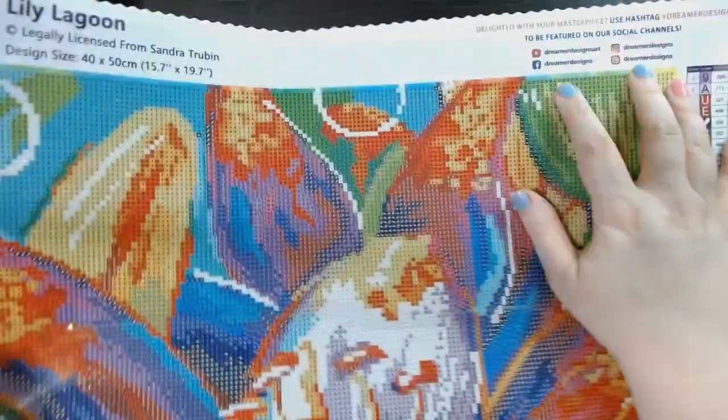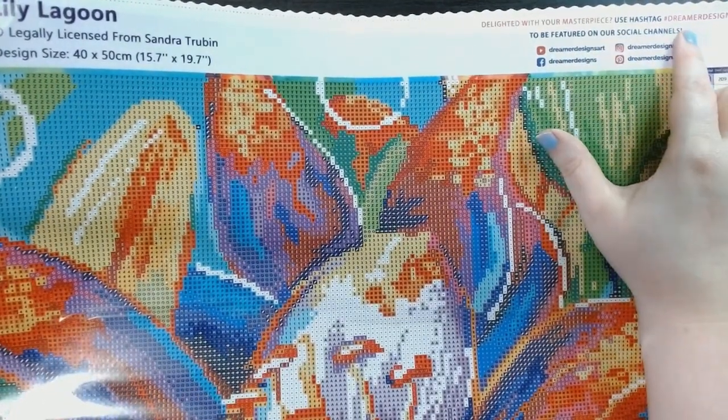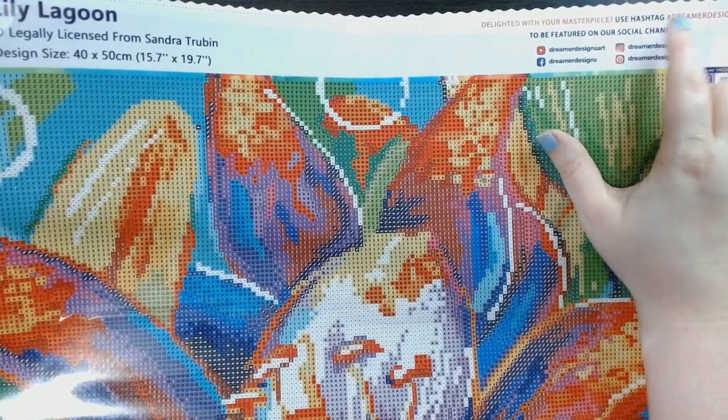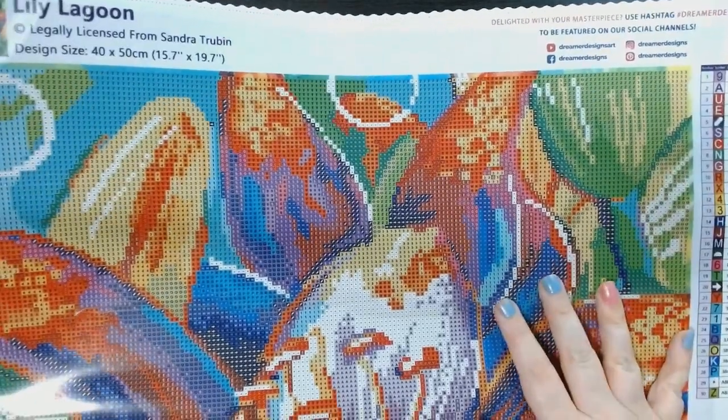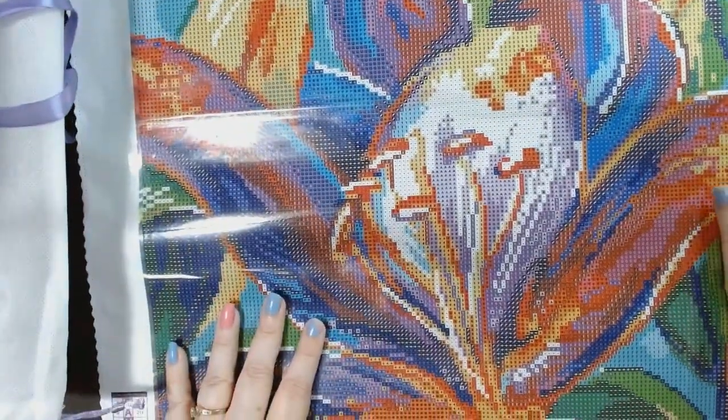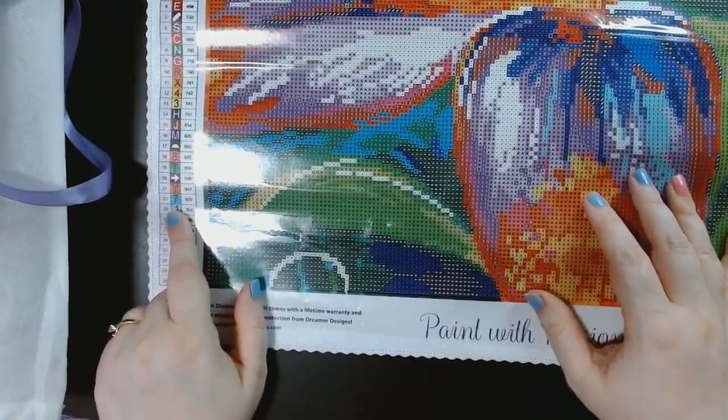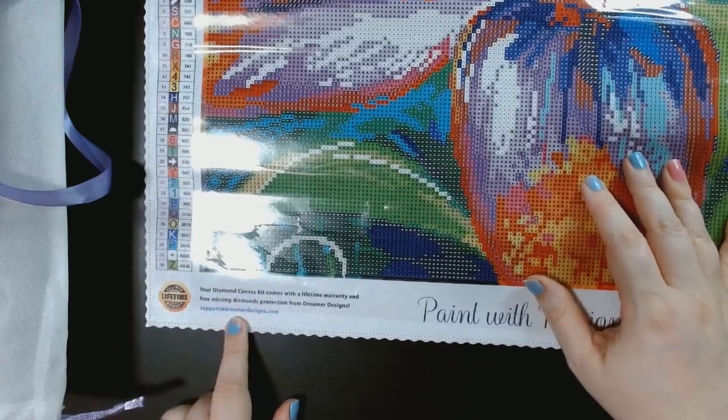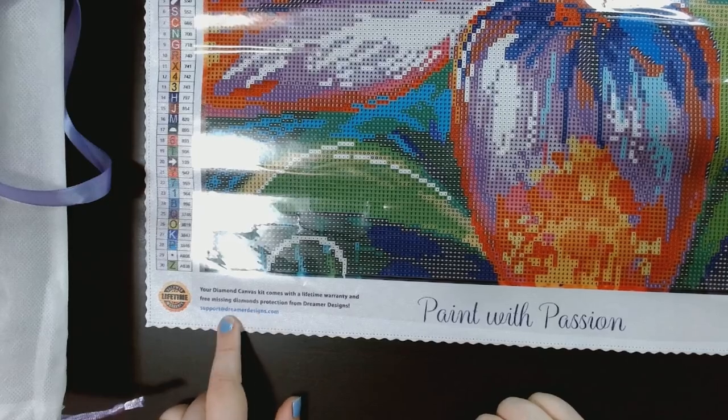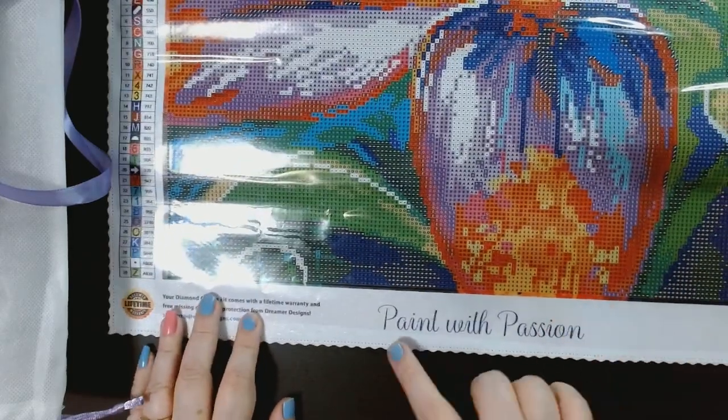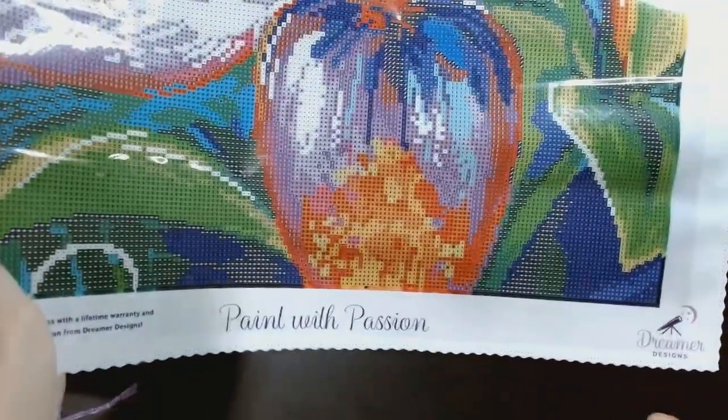And then on this side it has Delight with your masterpiece. Use hashtag Dreamer Designs to be featured on our social media channels. And it has all our social media on the top right and the bottom left. They have the legend. On the bottom left they have the lifetime warranty. And if you have any problems to contact support. In the middle is Paint with Passion. And on the right bottom corner has their logo.